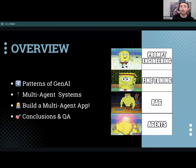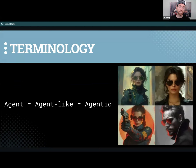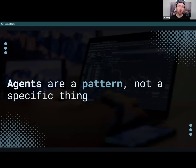Let's cover the patterns of Gen AI that build up to agents, and then we can expand our idea of agents into multi-agent frameworks and tools before we build our multi-agent app. Agent, agent-like, agentic — these are exactly the same thing. Don't let anybody make you feel stupid by using bigger, fancier versions of these words. They are not bigger nor fancier. Feel free to use them at will.